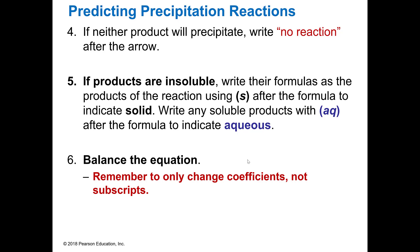If neither one precipitates, it's no reaction because you're testing it for precipitation. So if you don't get a solid, it's no reaction. If products are insoluble, you write the S beside them. That tells me which one is a solid. Everything else is water soluble, which we call aqueous, which is aq. Then you balance the equation, only changing the coefficients. That's why you do the formula first, because you can't change the formula, only the coefficients when you balance.